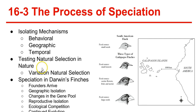Testing natural selection in nature. Darwin's hypothesis relied on two testable assumptions regarding his finches. In order for beak size and shape to evolve, there must be enough heritable variation in those traits to provide raw material for natural selection — the beaks must differ from each other. Additionally, differences in beak size and shape must produce differences in fitness that cause natural selection to occur, so the different beaks must give some finches a survival advantage.